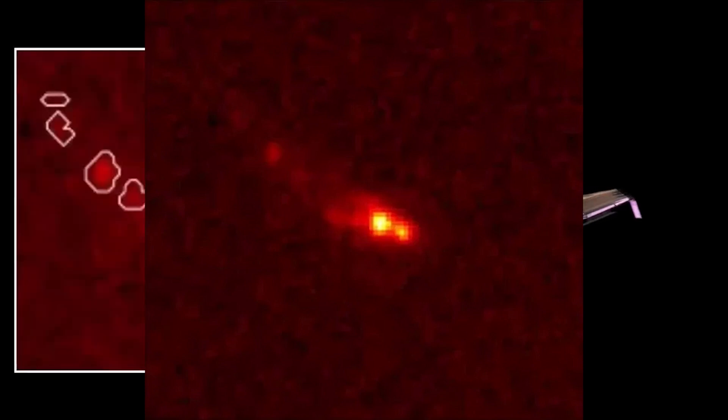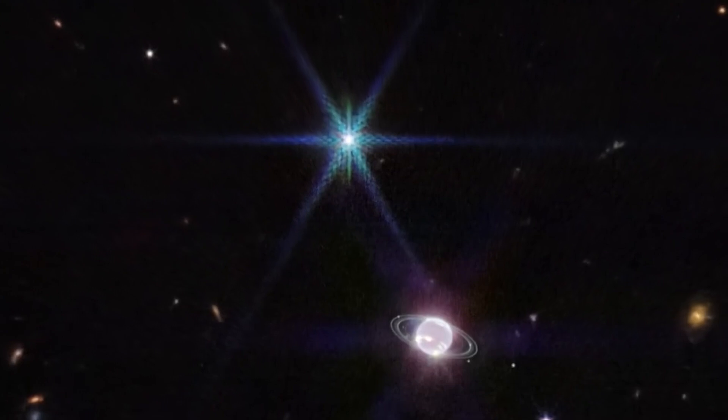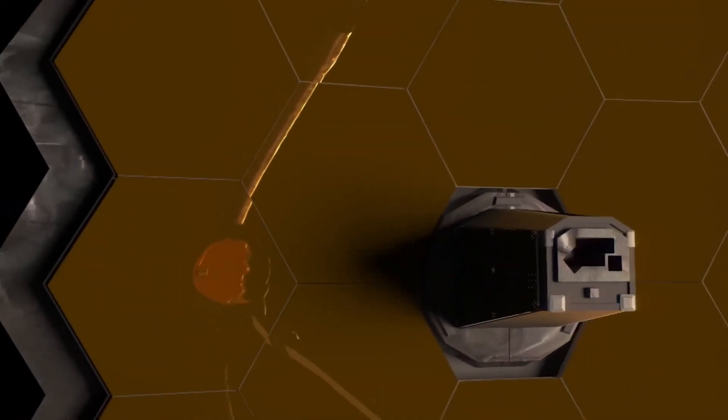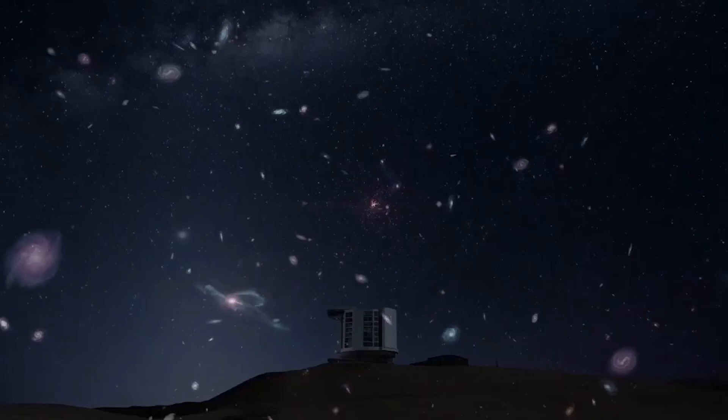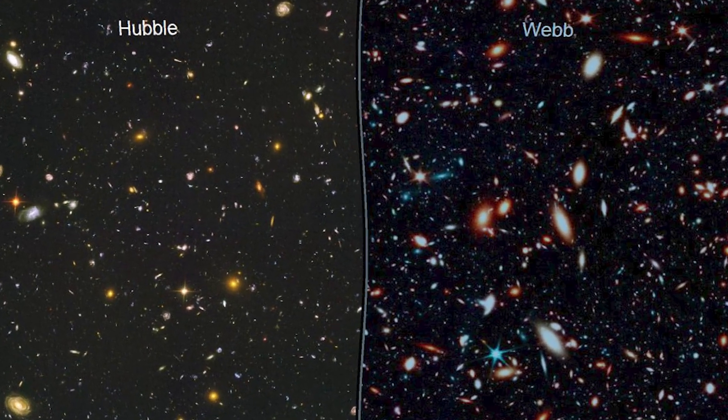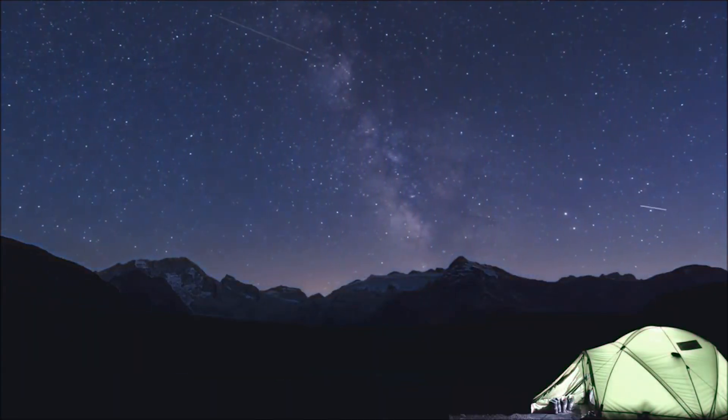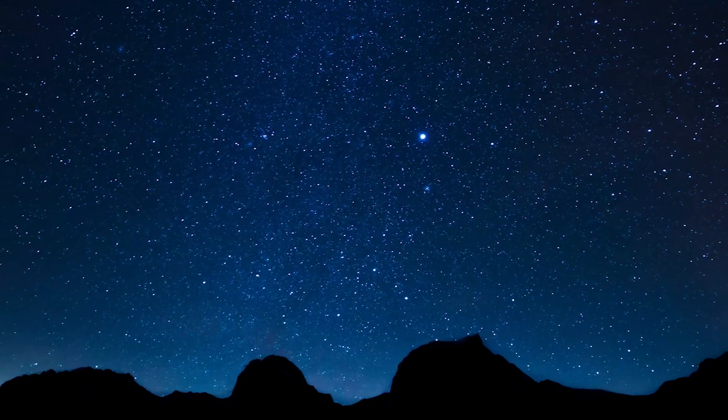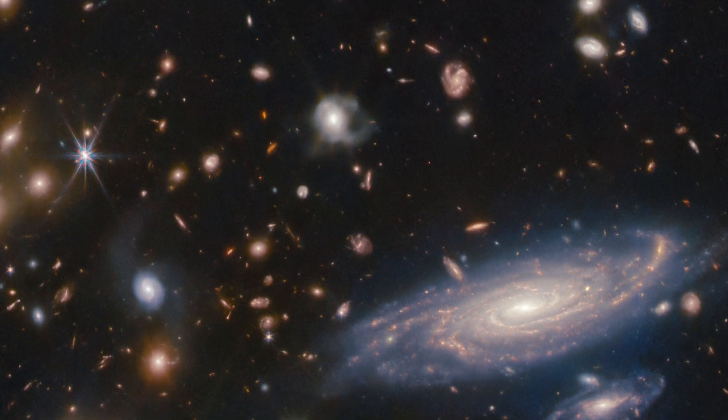Recent observations from the James Webb Space Telescope have provided further validation of the existence of the Hubble tension. Indeed, the James Webb Space Telescope has corroborated the findings of its predecessor, the Hubble Space Telescope. The groundbreaking observatory has revealed that Hubble's calculations regarding the universe's expansion rate stand out, exacerbating the perplexing Hubble tension. In essence, the measurements of the universe's expansion rate, encapsulated by the Hubble constant, remain at odds.